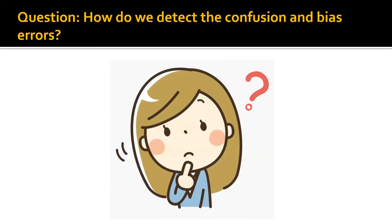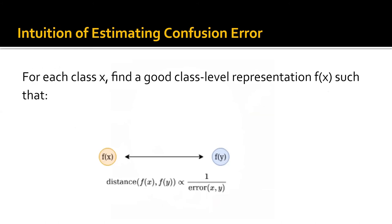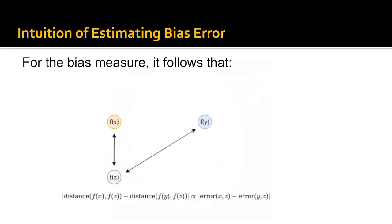This is all good, but when we ask how do we detect the proposed confusion and bias error, here is the idea. For each class X, we find a good class representation of X such that the distance of two class representations is inversely correlated with the confusion measure, error(x, y). It follows that for bias error measure, this confusion disparity X, Y, Z will be proportional to the difference of error X, Z and error Y, Z. So that will be proportional to the distance between f(x) and f(z) subtracted by the distance between f(y) and f(z).